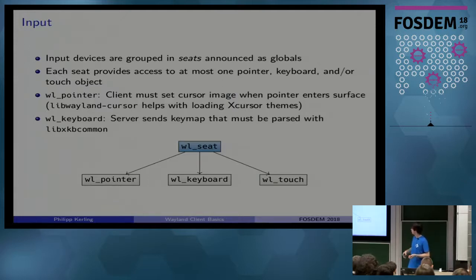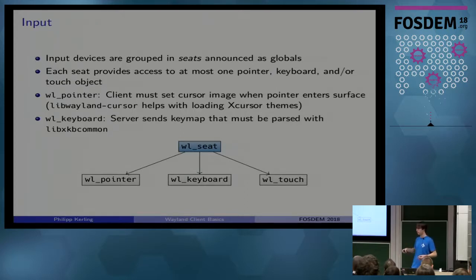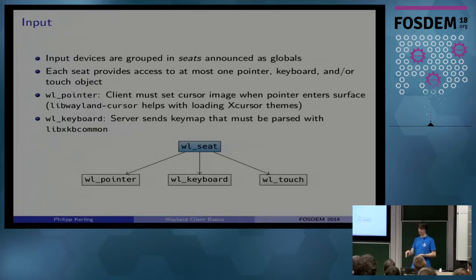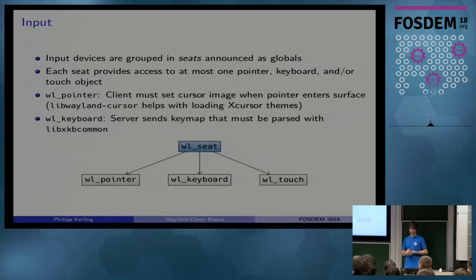Via the seat, you can get access to the pointer, keyboard, and touch. For the pointer, there's the special thing that you have to take care of: setting the cursor. When the pointer enters your window, you have to give the Wayland compositor a cursor image to use. The Wayland client library handles most of that and loads standard X cursor themes. For the keyboard, the server sends you simple key events when something is pressed, but you have to decode them with xkbcommon, because the server will also send you the keymap the user is using.